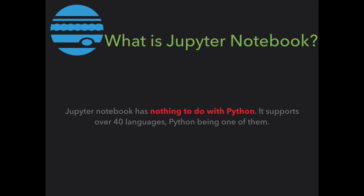Jupyter Notebook has nothing to do with Python. It's a platform that allows the mixing of multimedia, equations, and code in the same document. It supports over 40 languages — you can do Fortran in it, R in it. Dr. Silcox uses Jupyter Notebooks with R. We choose to use Python. The most popular combination is Python with Jupyter Notebooks. We're using Python inside a Jupyter Notebook, so you have to make that distinction.